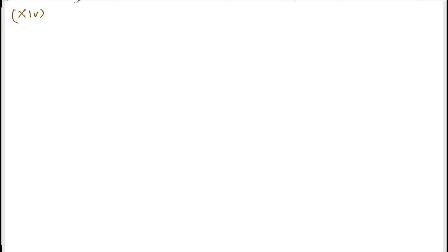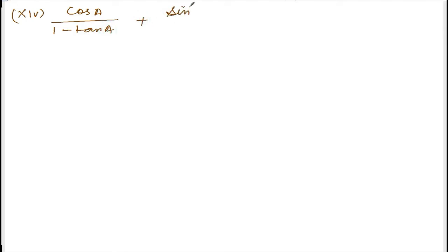We are doing exercise 10.2, question number 11, roman number 14. The question is: cos(a) divided by 1 minus tan(a), plus sin(a) divided by 1 minus cot(a), is equal to sin(a) plus cos(a).